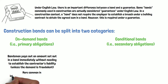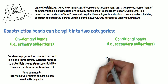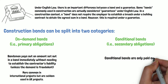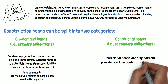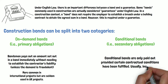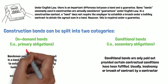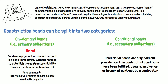On-demand bonds are more common in international projects and are seldom used in UK projects. Conditional bonds are only paid out provided certain contractual conditions have been fulfilled, usually insolvency or breach of contract by a contractor. As you can see, on-demand bonds are more akin to what English law defines as a bond, and conditional bonds are more akin to what English law defines as a guarantee.